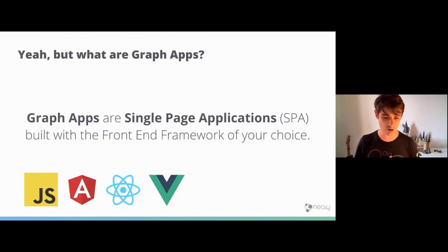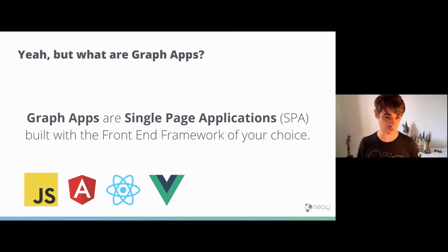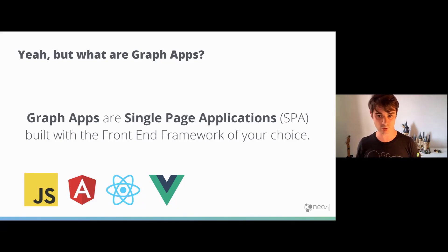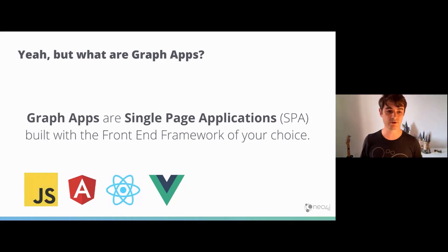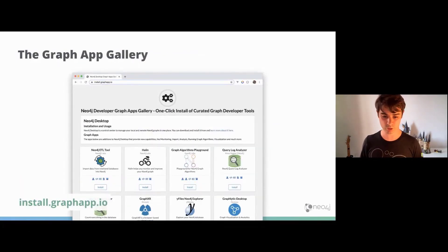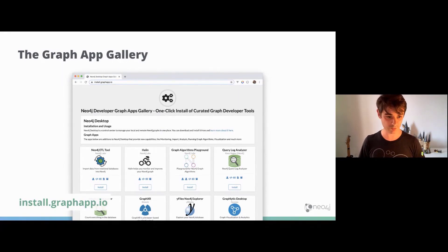Graph apps themselves are single page applications built with the front-end framework of your choice, or with vanilla JavaScript and HTML. These graph apps are served by Neo4j Desktop through the Chromium browser. For a comprehensive list of all available graph apps, you can go to install.graphapp.io, or there is a graph app which allows you to view and install graph apps inside Neo4j Desktop itself.